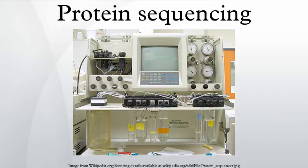A protein sequencer is a machine used to determine the sequence of amino acids in a protein. They work by tagging and removing one amino acid at a time, which is analyzed and identified. This is done repetitively for the whole polypeptide until the whole sequence is established. This method has generally been replaced by nucleic acid technology, and it is often easier to identify the sequence of a protein by looking at the DNA that codes for it.